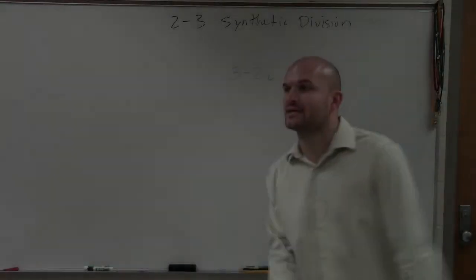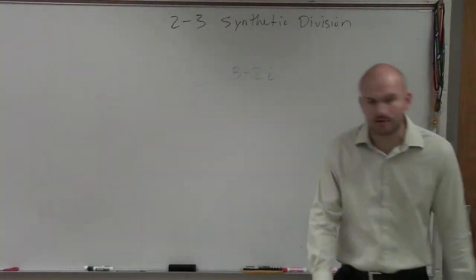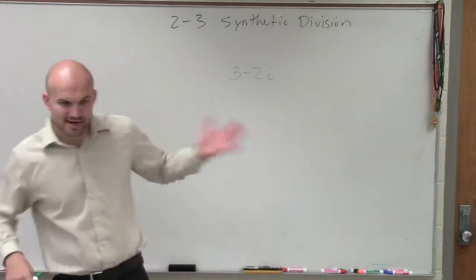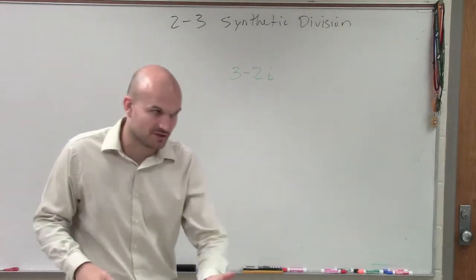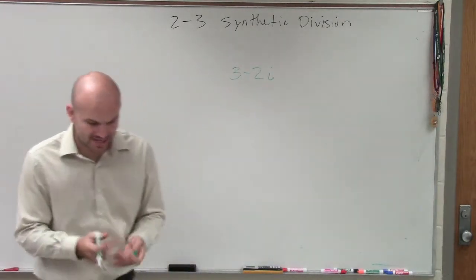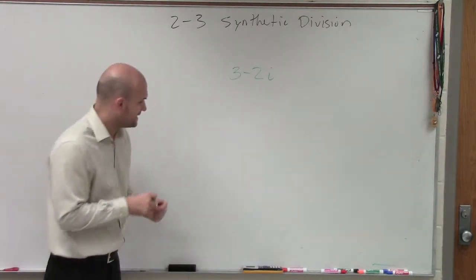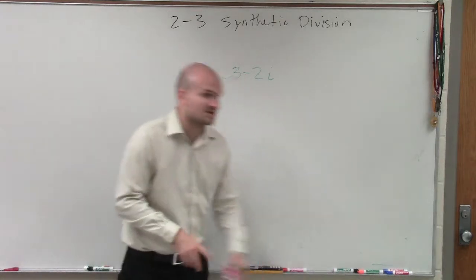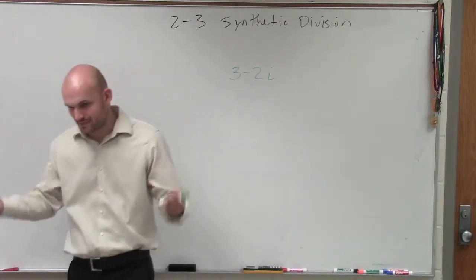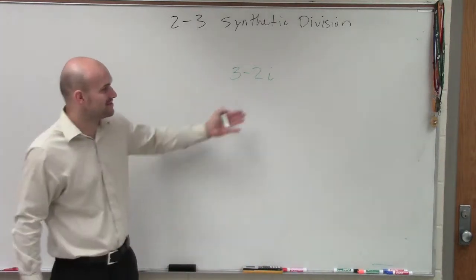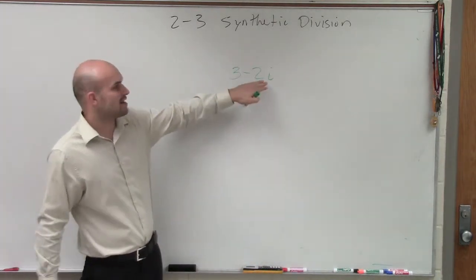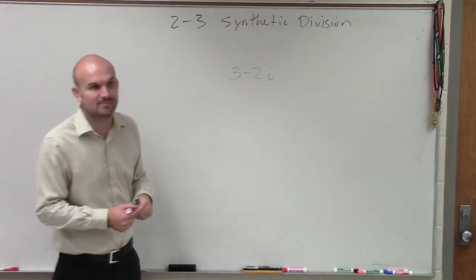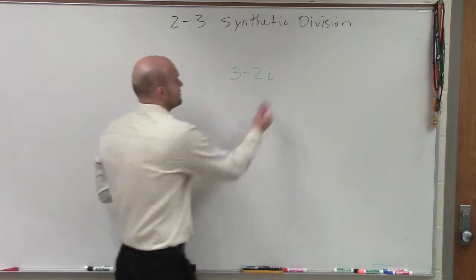We need to multiply by the complex conjugate. First of all, if I have 3 minus 2i, you guys have to understand the complex conjugate. The complex conjugate is going to be our exact same expression, except our imaginary term is now going to be positive.